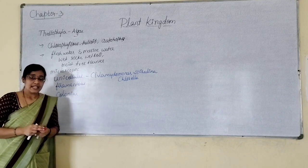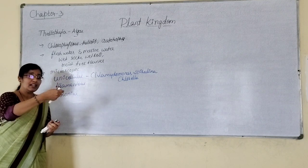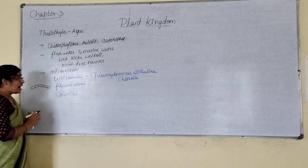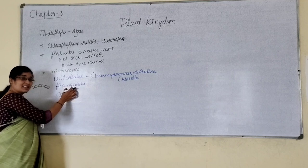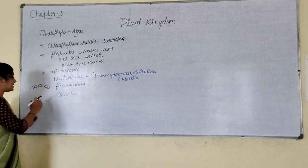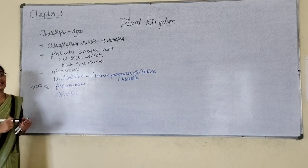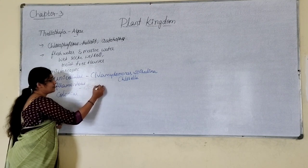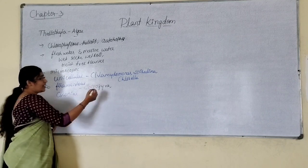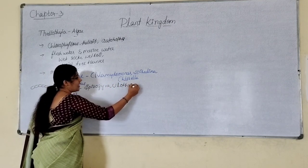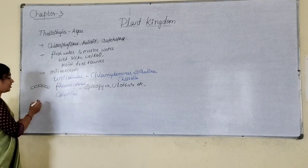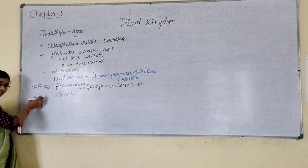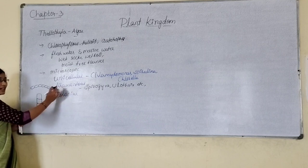In some other algae, the cells form a thread-like structure — cells are aggregated together to form a thread-like structure, and that type of algae is called filamentous algae. Filamentous algae can be seen in the case of Spirulina and Ulothrix, where many cells are present one after the other to form a filamentous thread-like structure.